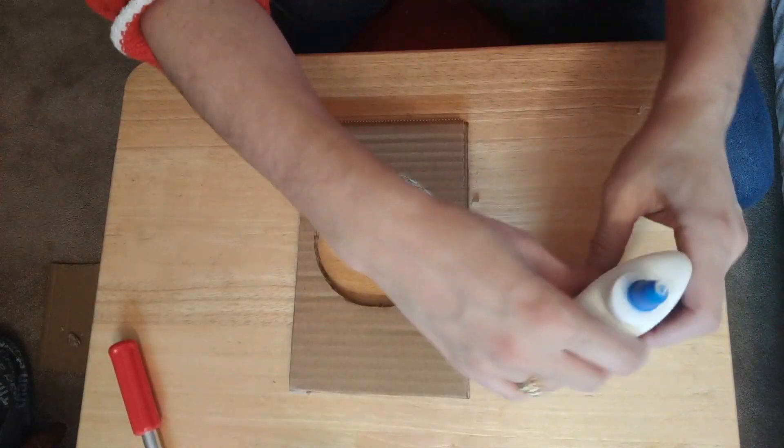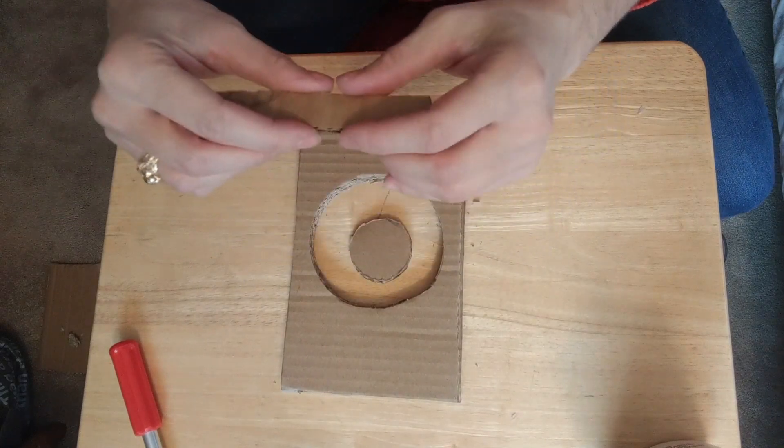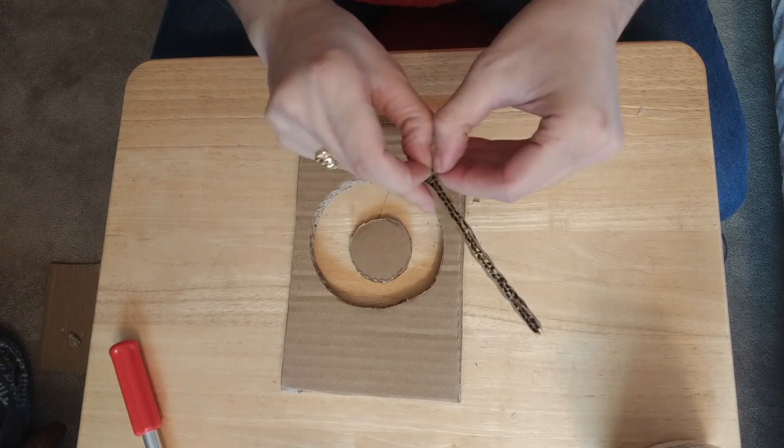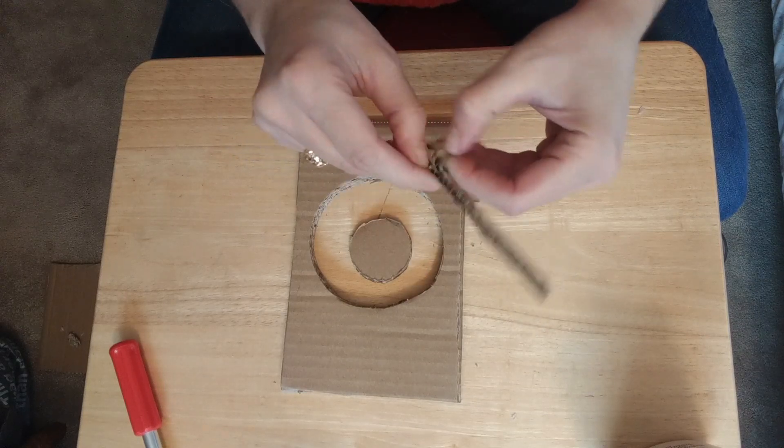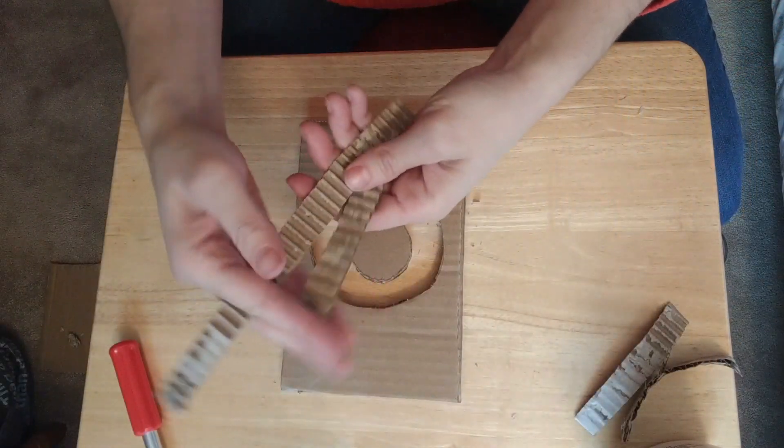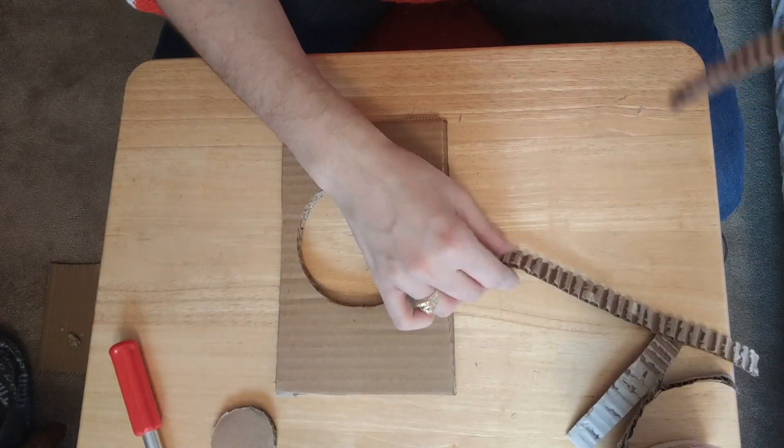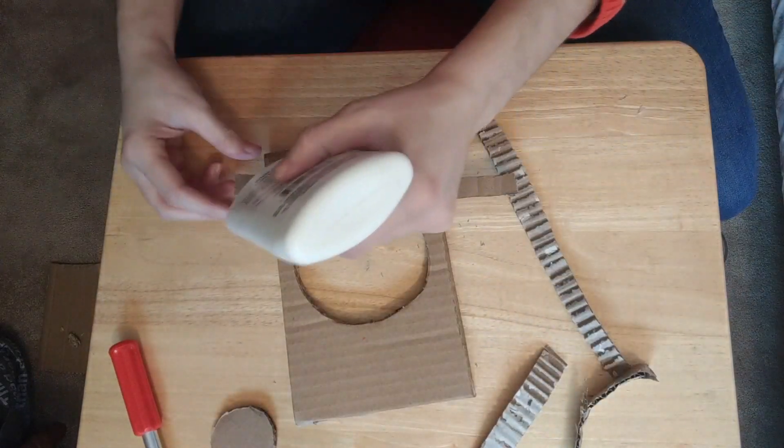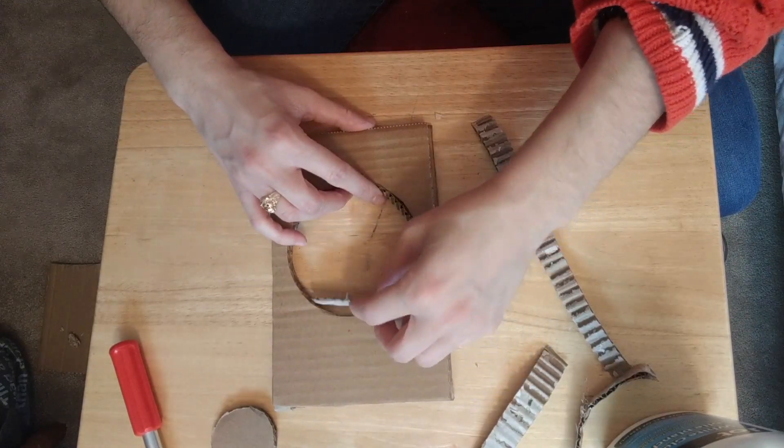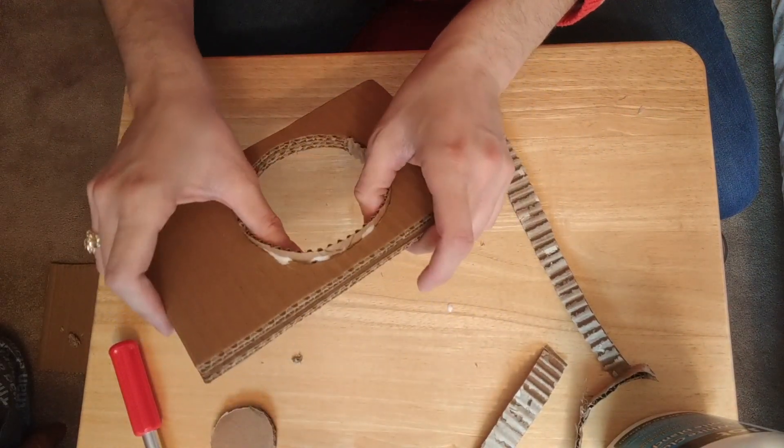This is why it's important to use the corrugated cardboard, because we're gonna cut some strips like a half inch or so, and we want to separate those corrugated parts. I have a few longer strips that I've already separated, and we're gonna take our craft glue and glue them around the inside. Make sure I get it up against all those edges.